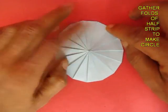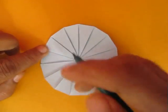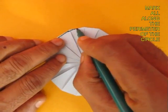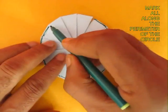This is the circle. Now with the help of a sketch pen mark the circumference of the circle.